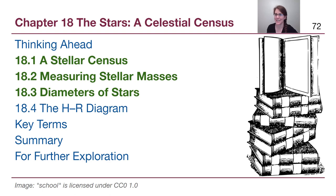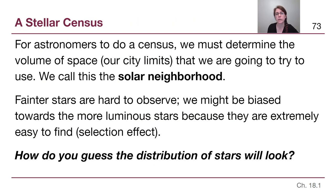Welcome to Chapter 18. In this chapter of OpenStax Astronomy, we are going to be talking about the specific ways that astronomers gather information about stars. We're going to start out by thinking about the different types of stars that we mentioned back in Chapter 17, and talk about how astronomers actually count up which ones are more common than others.